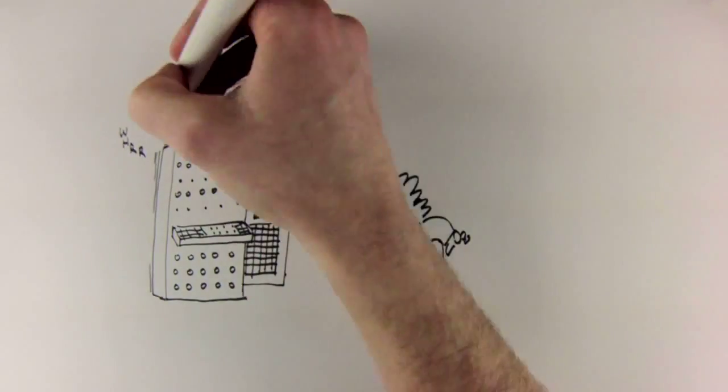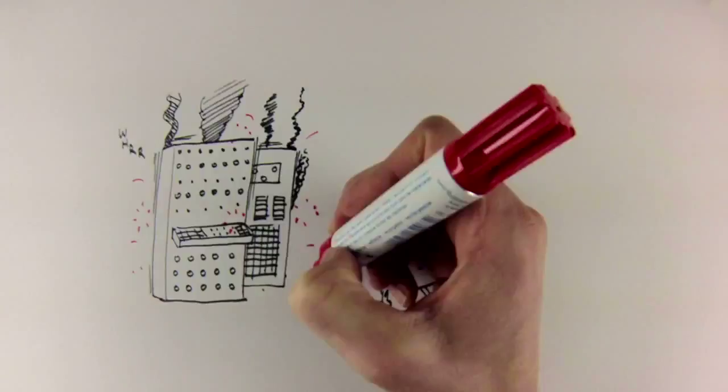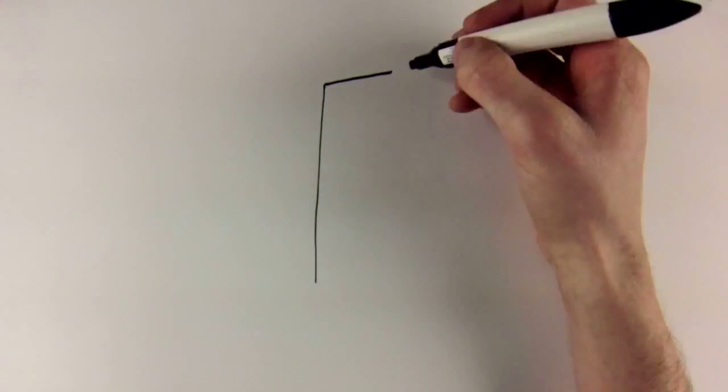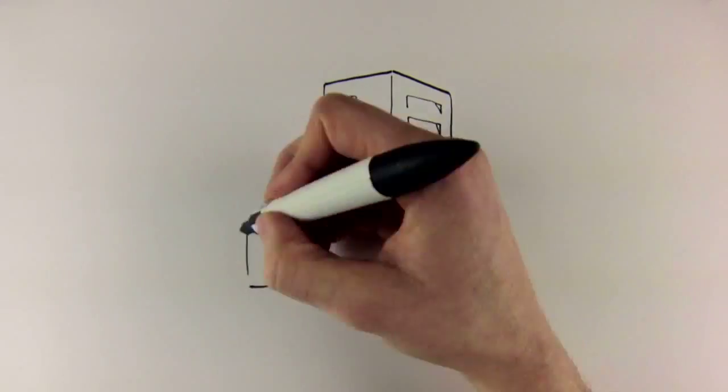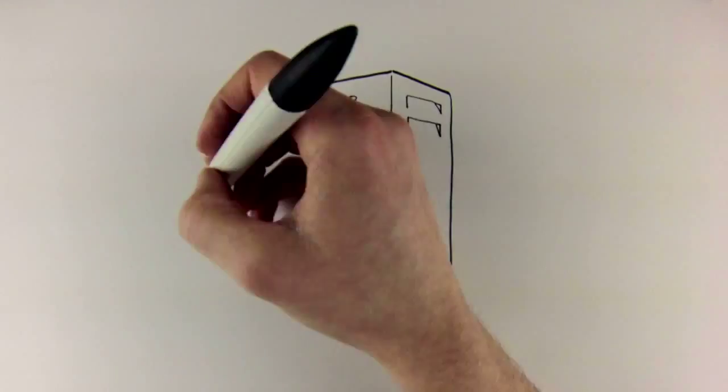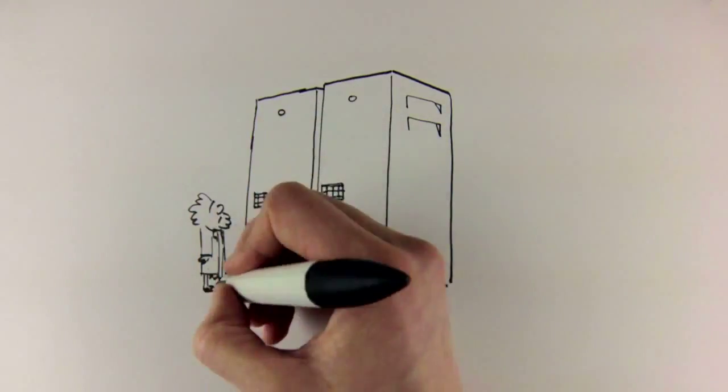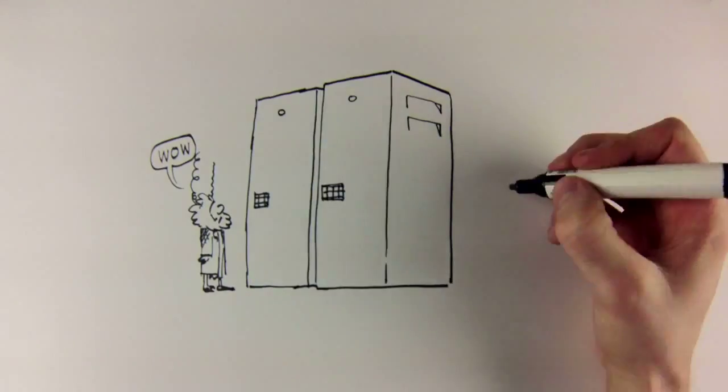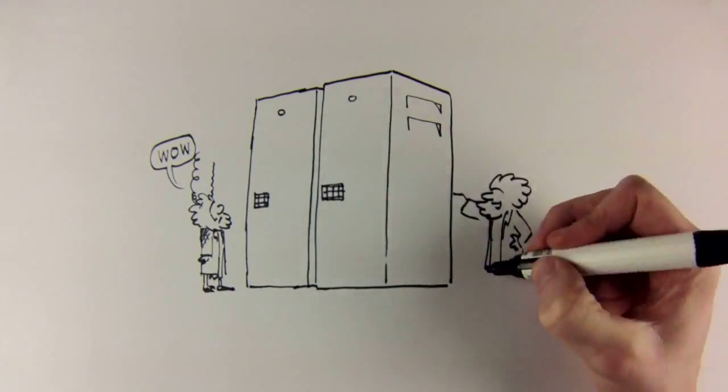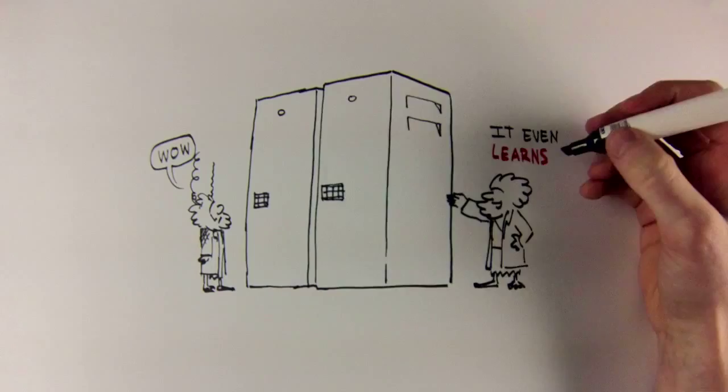These days, our computers are thousands of times more powerful than back then, and with modern programming algorithms, computer scientists have developed computer systems that can learn about data that is fed to them. In fact, things have improved so much that computer systems are now able to learn how to translate automatically between languages if you give them the right data.